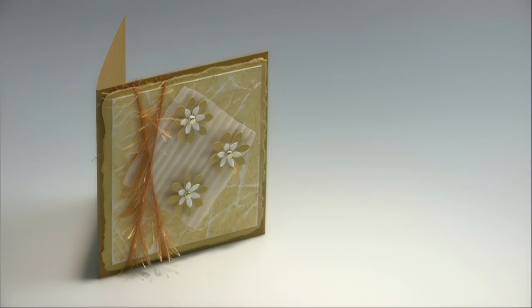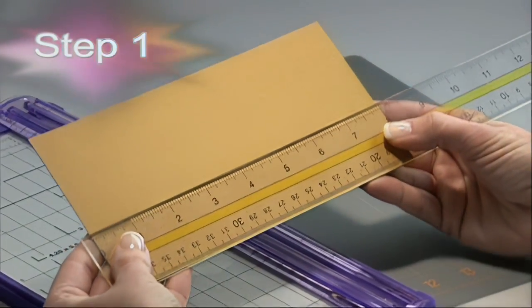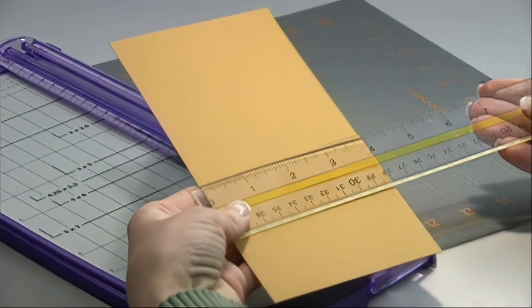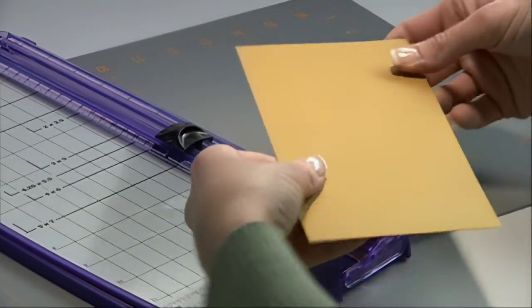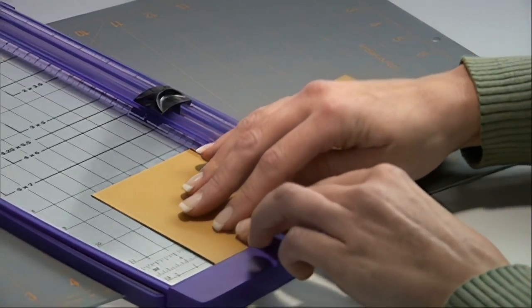This square card is perfect for all occasions. For this square card we will start with a piece of dark yellow cardstock measuring 8 inches by 4 inches. We will use our paper trimmer and scoring blade to score in half at 4 inches.